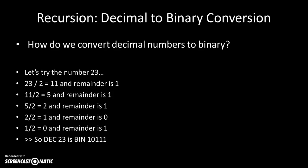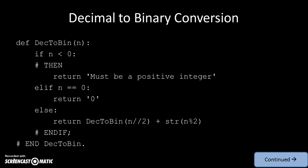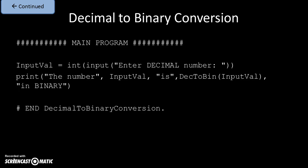We saw how to convert to binary by dividing repeatedly into a value and looking at the remainders. The code is very much like the pseudocode. We define a module called decimal_to_binary that takes in a value n. If n is less than 0, we say it must be a positive integer. Else if it's 0, we return the string '0'. Else we return decimal_to_binary(n // 2) concatenated with str(n % 2). That gives us our binary string. The main program is: enter a decimal number and print whatever its binary value is.